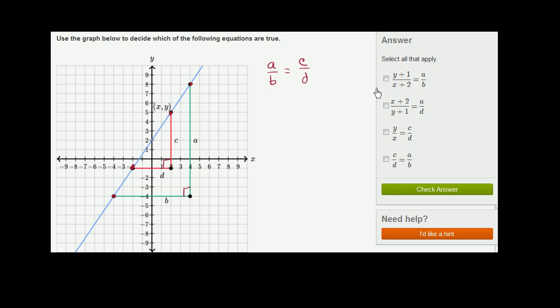Now let's work through some of this other stuff right over here. So they say y plus 1 over x plus 2 is equal to the ratio of a to b. Let's see if that's right. So this is the point x comma y. So what's y plus 1? Well, y plus 1 is literally the same thing as the length c right over here. Notice, this height, let me do this in a new color, this height right over here, this is y. But then if you add 1, you get all the way down here. So this right over here is y plus 1.